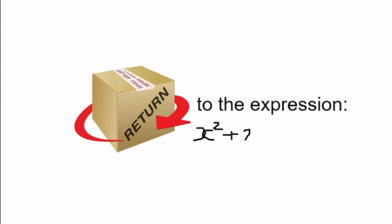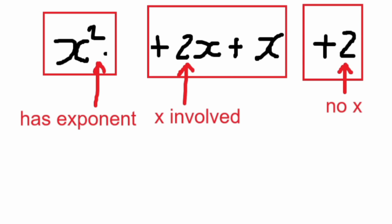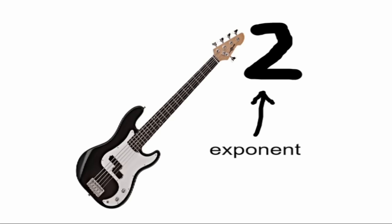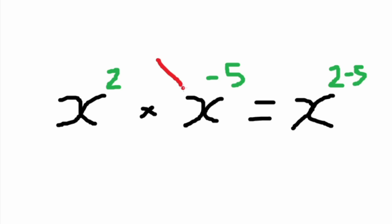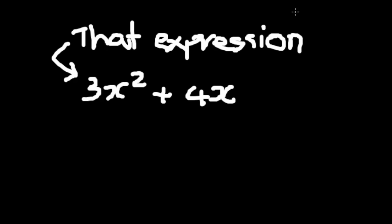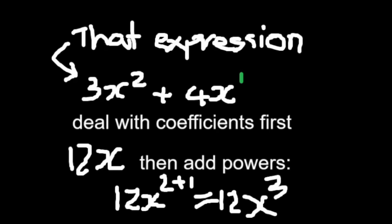Returning to the expression x squared plus 2x plus 1x plus 2, we simplify it down to x squared plus 3x plus 2. What we did is we separated each term from each other based on coefficient and exponent, then added them together. When dealing with powers and roots, there is the coefficient, which you always deal with first, then there's the base and the exponent. If the bases are the same, we add powers when multiplying bases and subtract when dividing. You deal with coefficients first — 12 — then add the powers, so in the end you get 12x to the power of 3.